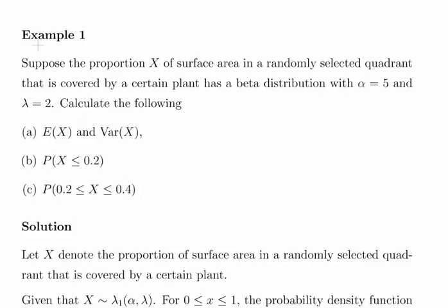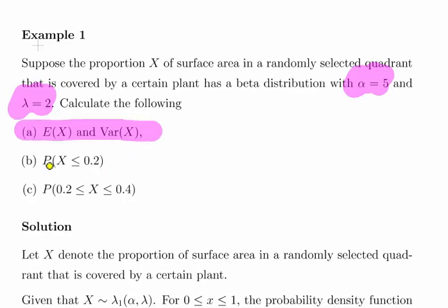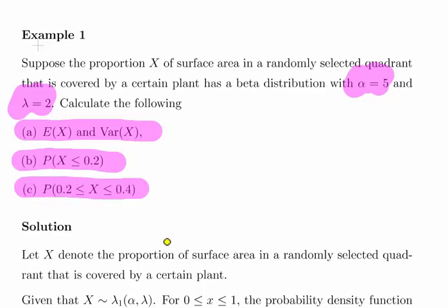Suppose the proportion x of a surface area in a randomly selected quadrant that is covered by a certain plant has a beta distribution with alpha equal to 5 and lambda equal to 2. Calculate: the expected value and variance, the probability of x less than or equal to 0.2, and the probability of x being between 0.2 and 0.4.